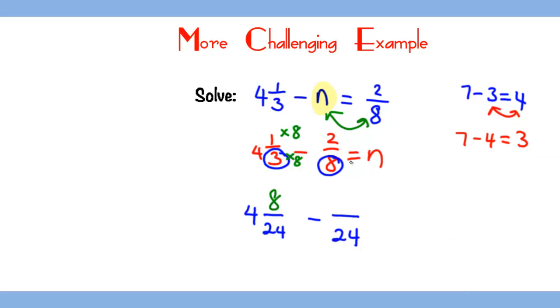To turn an 8 to 24, you multiply it by 3, so you do the same thing in the numerator and you get 6. So the final answer to this question will be 4 2/24, and simplifying that gives you 4 1/12.